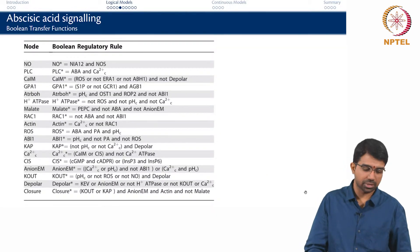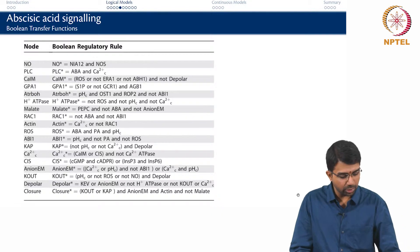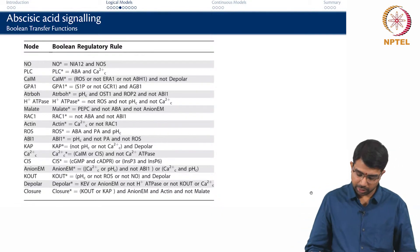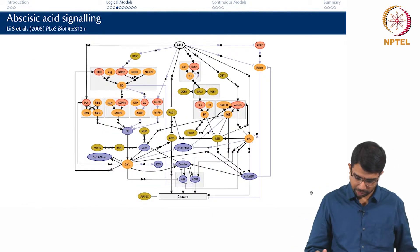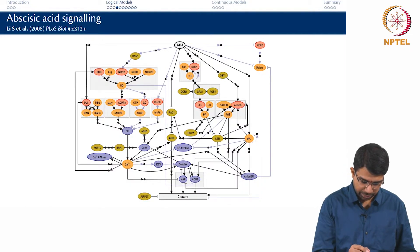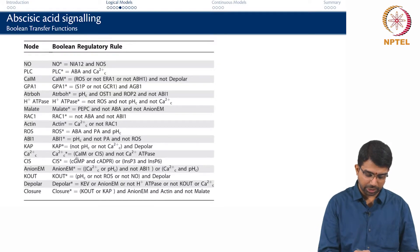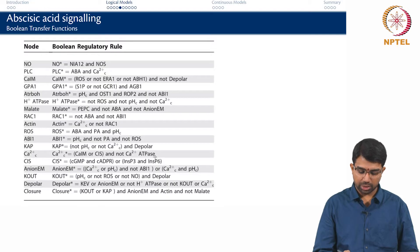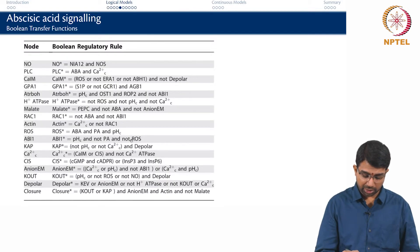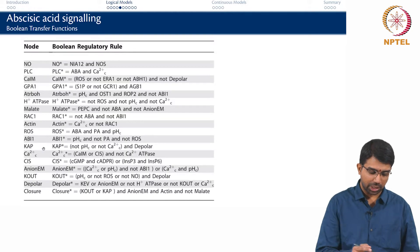You start writing out equations like this. You say that NO depends on NIA12 and NOS. If you spot it in this figure, NO is here and it depends on NIA12 and NOS, and there is a complex relationship for each of these things. Calcium depends on Calmodulin or CIS and not calcium 2+ ATPase and so on. And ROS should not be there for something else to happen.